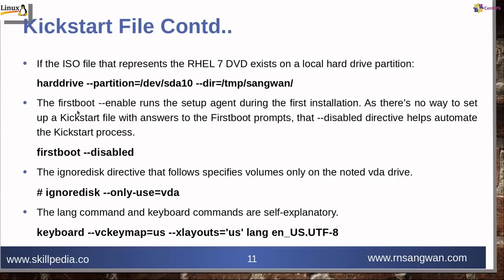The firstboot directive: firstboot --enable runs the setup agent during the first installation. Since there is no way to set up a kickstart file with answers to the first boot prompt, the --disabled directive helps automate the kickstart process — so I used firstboot --disabled. The ignoredisk directive specifies volumes only on the noted VDA drive: ignoredisk --only-use=vda.